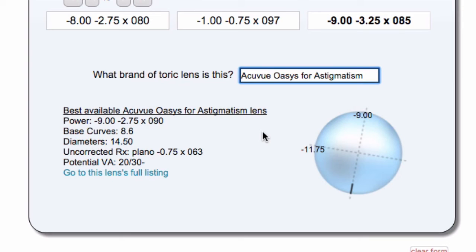And in this case, our axis is 90. Our cylinder power, the highest one it comes in is 2.75. And it tells you what, if you work with this lens, how close you're getting to the ideal lens. And in this case, we'd have about three quarters of a diopter of cylinder uncorrected. And if that works out like it should, our potential vision would be 20/30 minus, which with this prescription, you might find acceptable and might be worth a try.